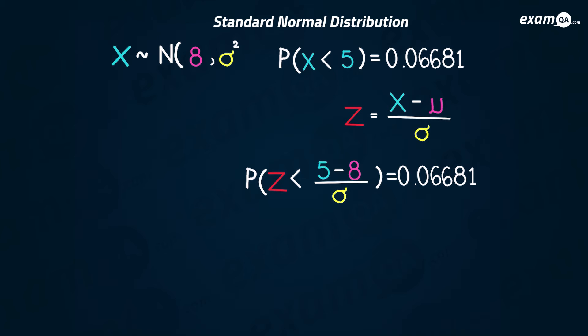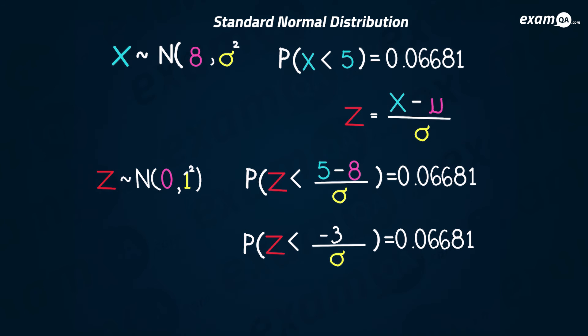The x turns to z, and we standardize the value 5: we do (5 − μ) / σ, which is (5 − 8) / σ. We simplify 5 − 8 to get −3 / σ, using the standard normal distribution. We do the inverse norm of 0.06681, which tells us that −3 / σ = −1.5. Rearranging, the standard deviation σ = 2.